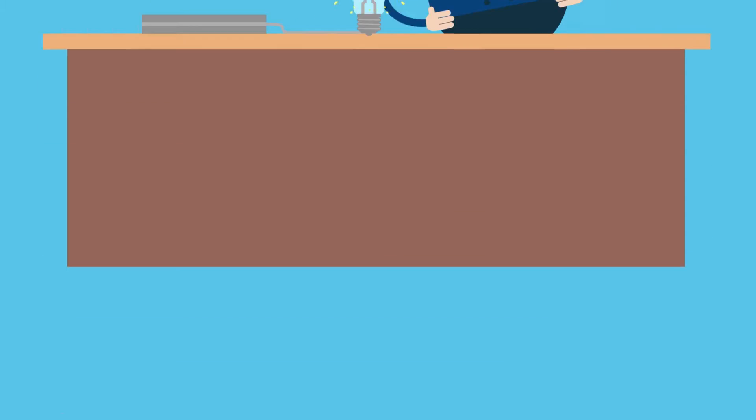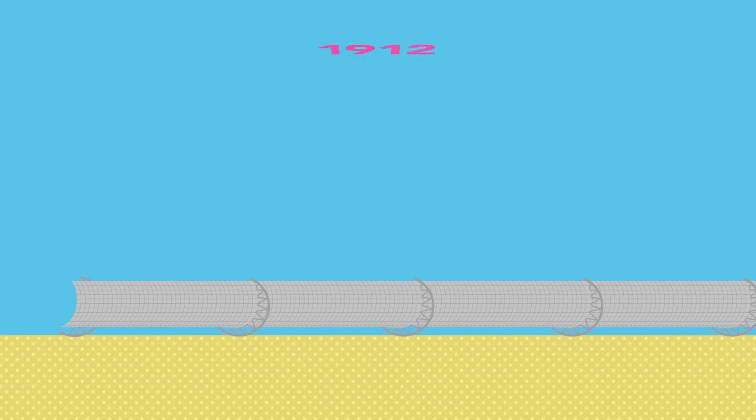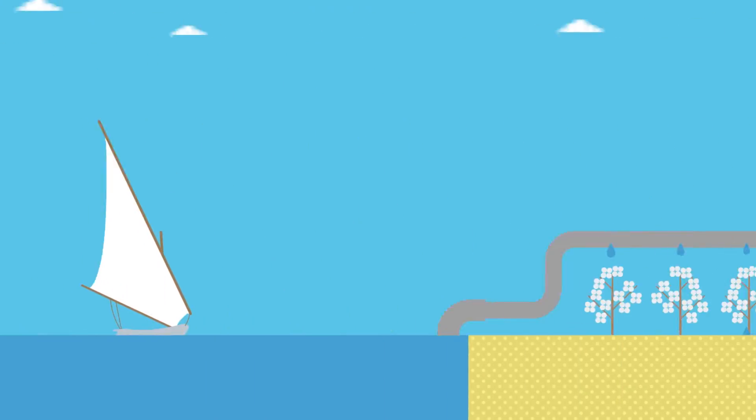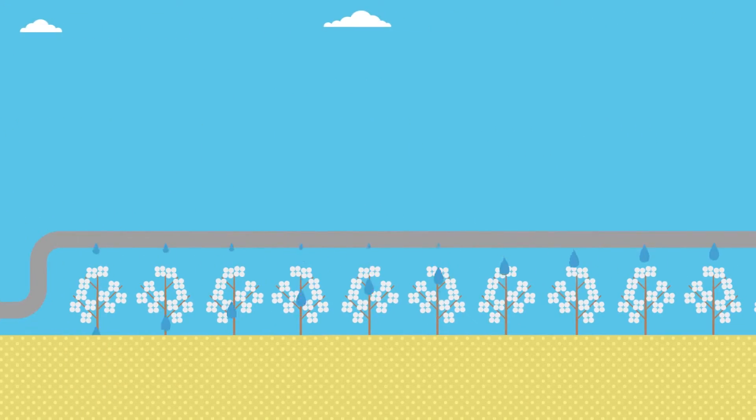These innovations led to the construction of the world's first solar power station in 1912. The power station, located along the Nile River in Egypt, was used to pump water from the river to adjacent cotton fields.